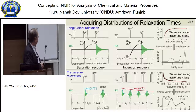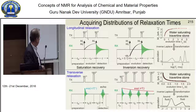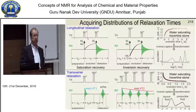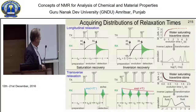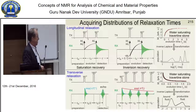We can do a similar thing by measuring transverse relaxation, for example with the Hahn echo, measuring many echo times, or measuring a train of echoes in the CPMG echo train. We get a decay of the signal which is a sum of many decays. We do an inverse Laplace transformation to find how many different decays there are with different relaxation times T2, and what the amplitude of those decays is. Again, we see a distribution of relaxation times, and that measures the pore size.